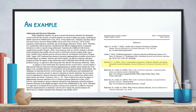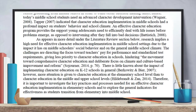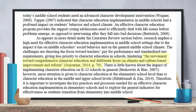This gives enough information that you could search the HCC databases to see if we have this article. In this screenshot, I'm pointing out a direct quotation. How can I tell this is a direct quotation? Did you notice additional information in the parentheses for the direct quotation versus the information that is in the parentheses for the paraphrased information?